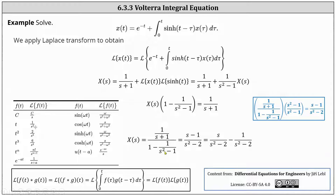And now we simplify the complex fraction on the right. One way to do this is to multiply the numerator and denominator by the LCD, which is s squared minus one, as shown in the blue box. Multiplying the complex fraction by the quantity s squared minus one over s squared minus one, the result is the quantity s minus one divided by the quantity s squared minus two. We can break this into two separate fractions: big X of s equals s divided by the quantity s squared minus two minus one divided by the quantity s squared minus two. To solve for x of t, we take the inverse Laplace transform of both sides.